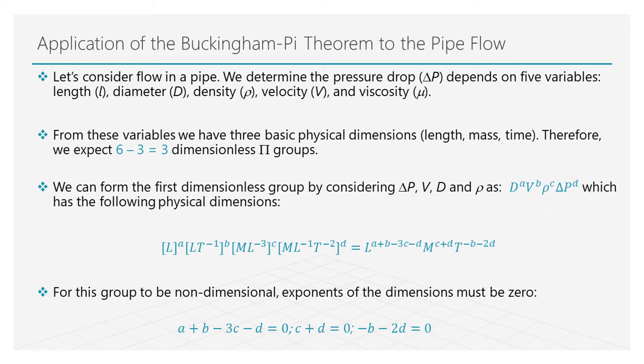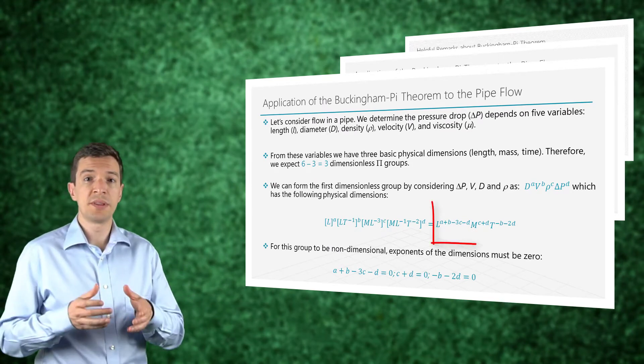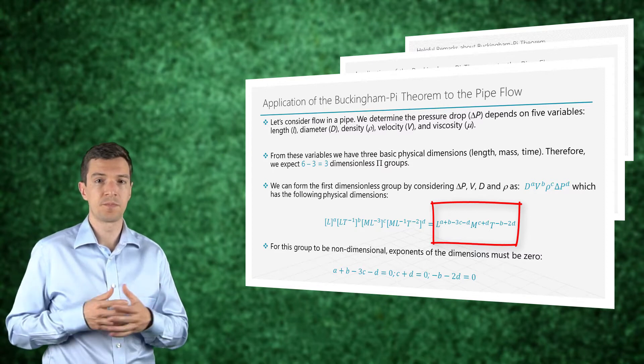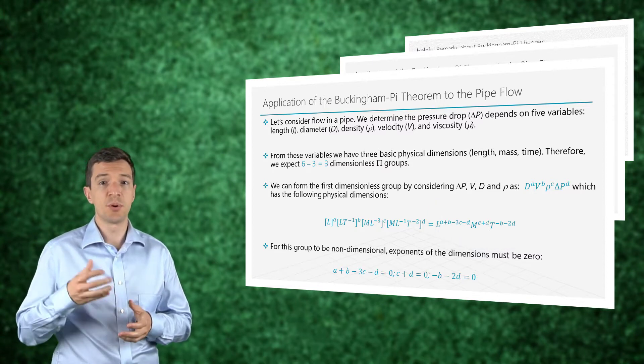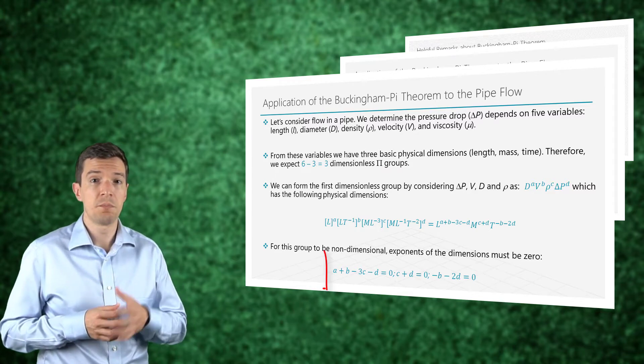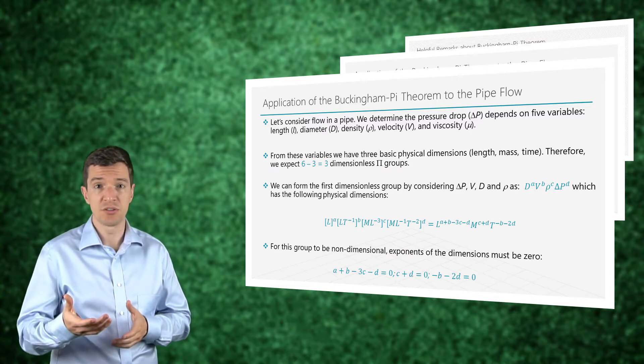The next step is to substitute each single variable into the fundamental quantities that describes them. We can then rewrite this expression, grouping the length, the mass and the time terms together. The exponents of each fundamental quantity must be zero, so that the parameter pi is dimensionless.